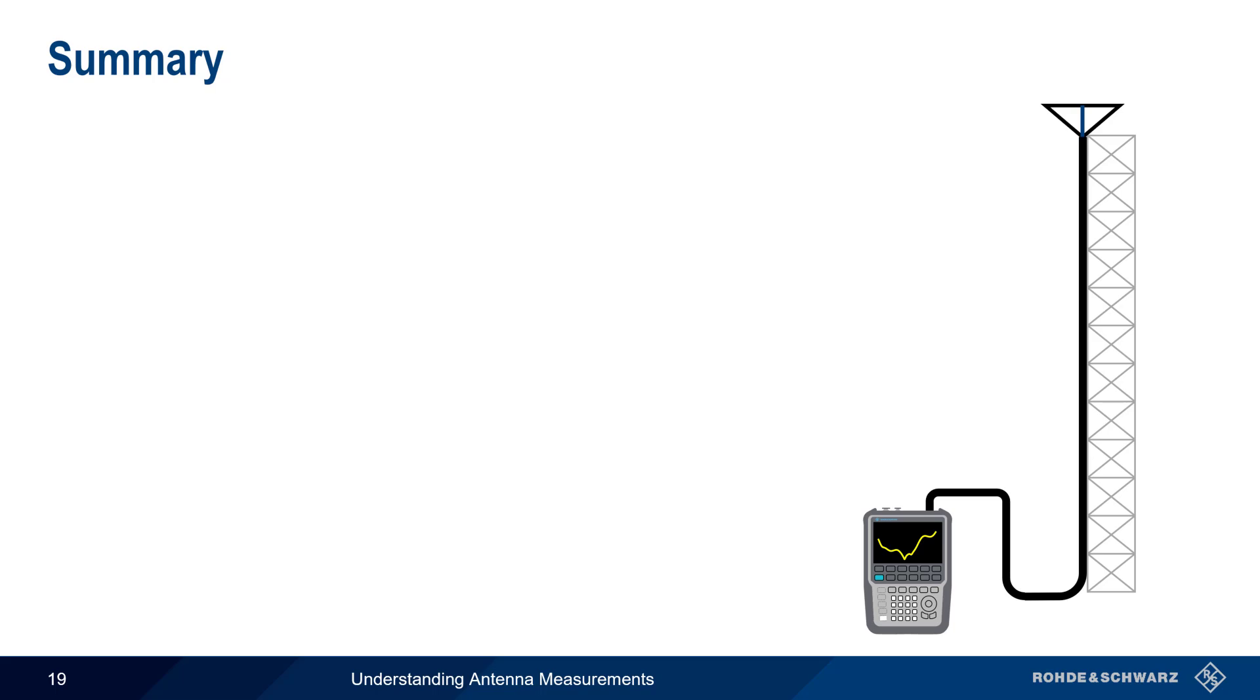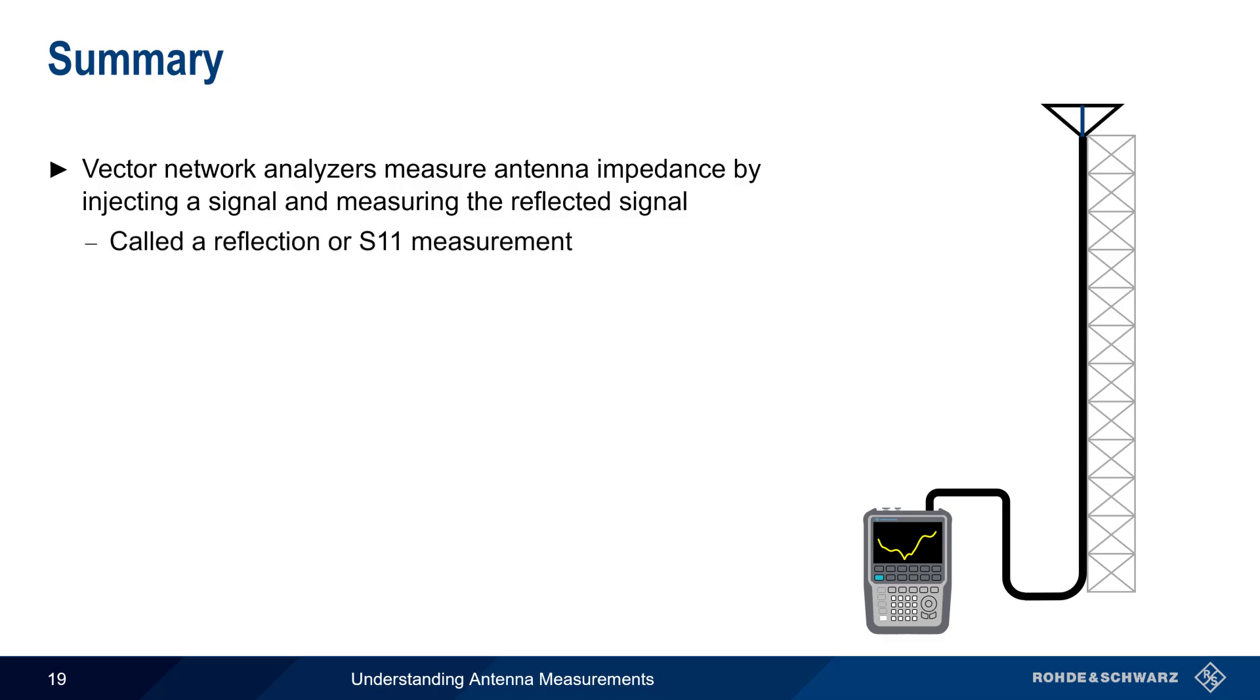Let's end with a brief summary. Vector network analyzers or VNAs can be used to measure antenna impedance by injecting a signal into the antenna or feed line, and then measuring the reflected signal. This is referred to as a reflection or S11 measurement, and is normally performed over a range of frequencies.